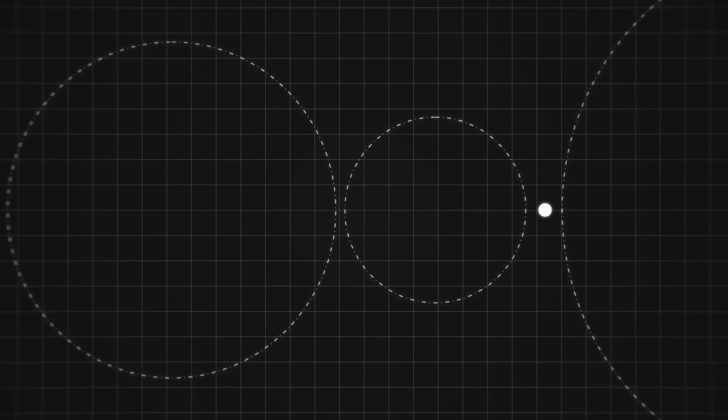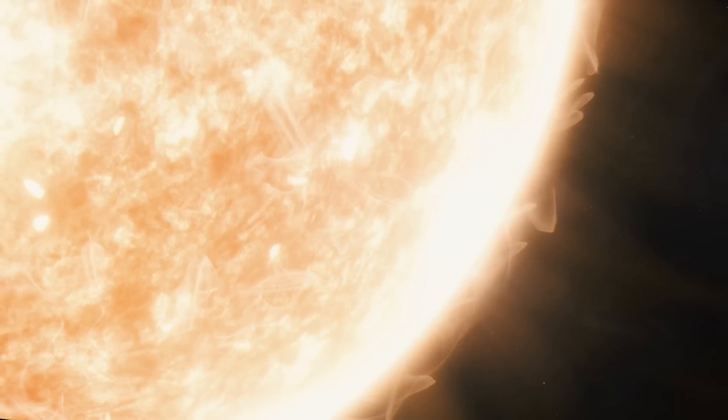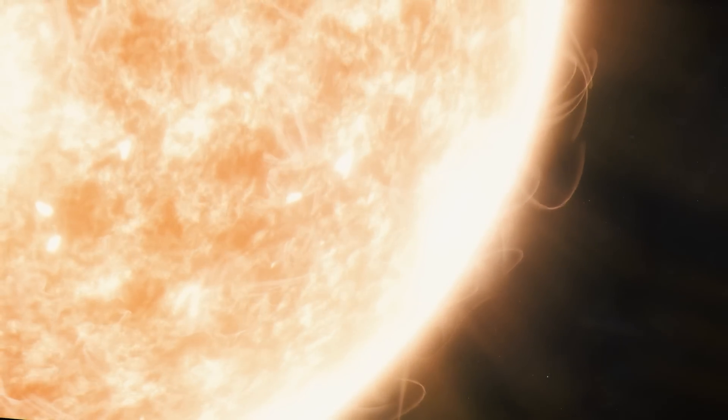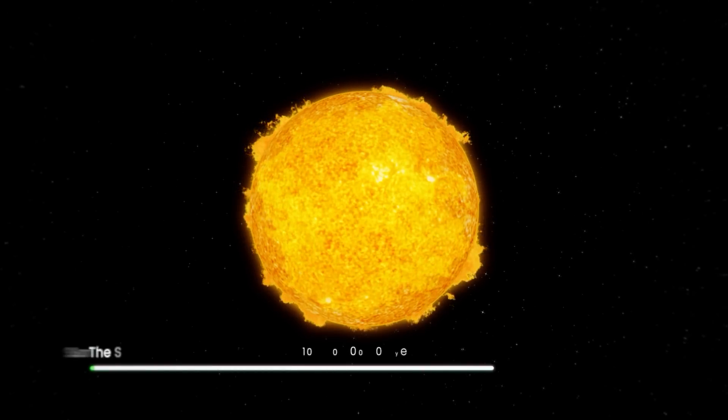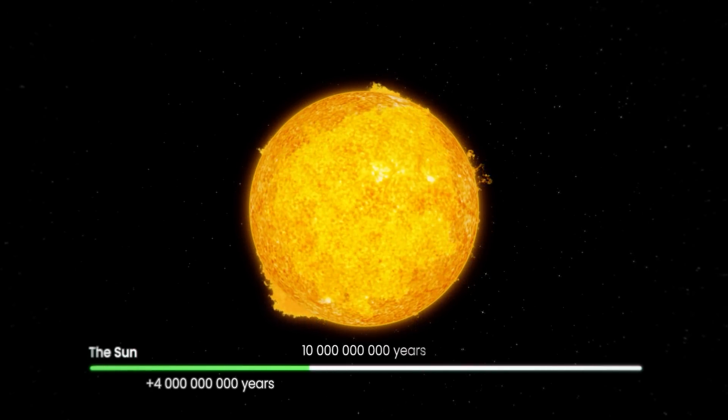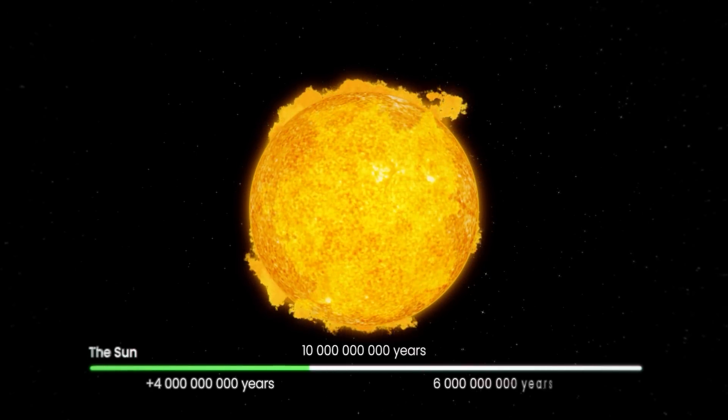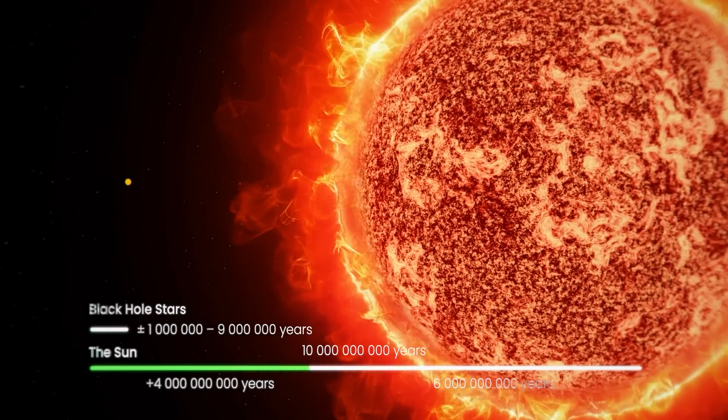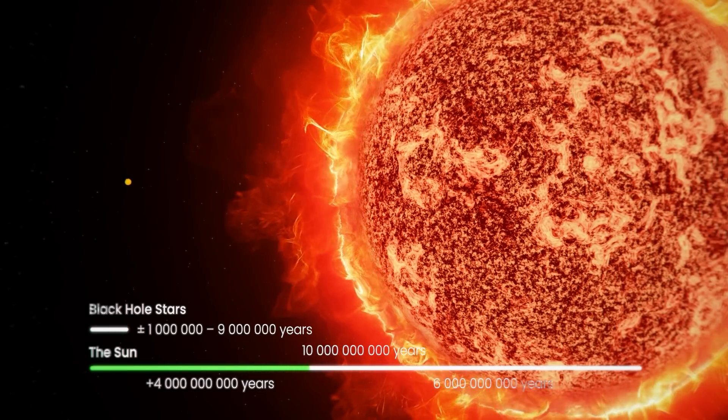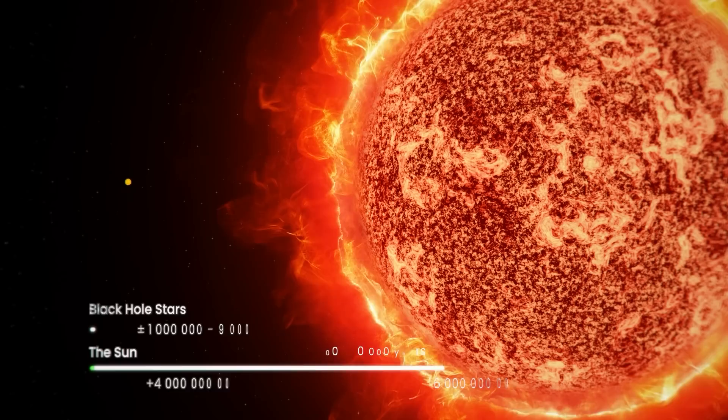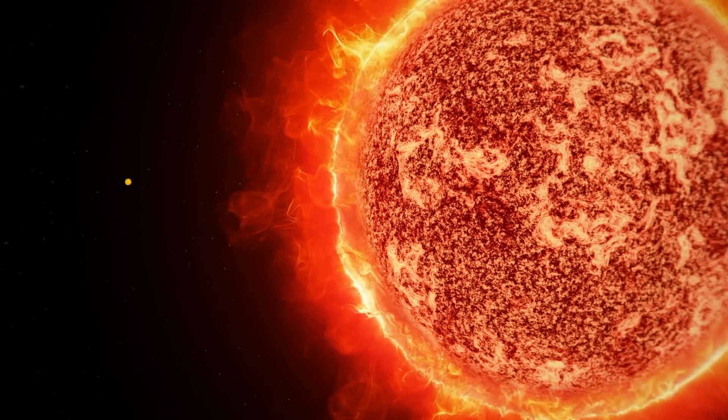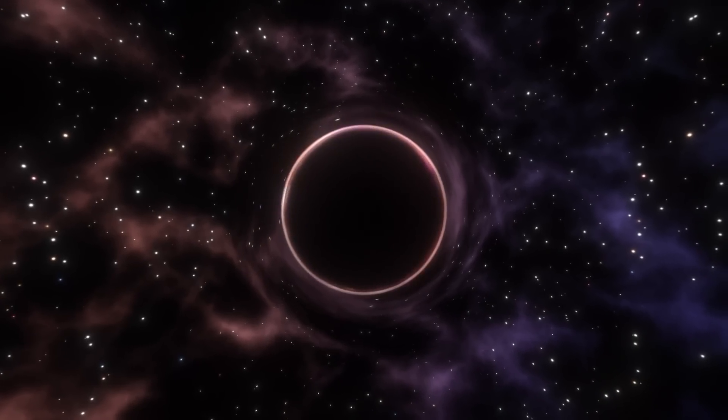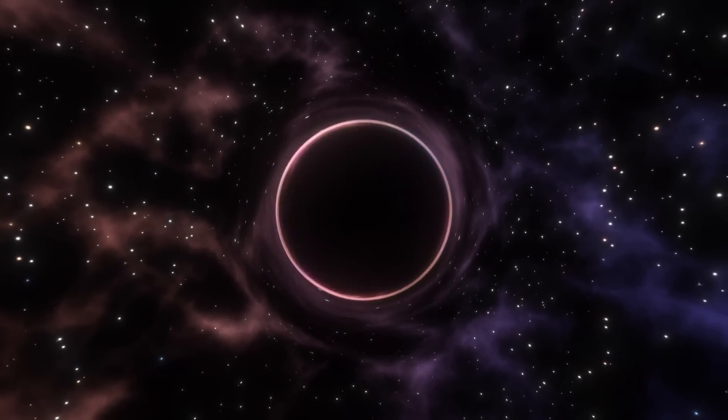But this gargantuan size and mass also causes problems. The larger the quasi stars become, the shorter their lifespan. Our sun has been around for over 4 billion years with approximately 6 billion years left in its lifespan, while black hole stars lasted for just a few million years before spectacularly exploding with unprecedented power, releasing an ever-hungry monstrous black hole ready to drift across space in search of more material to gobble up.